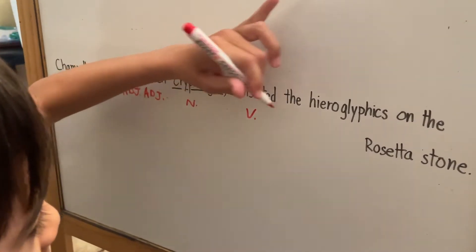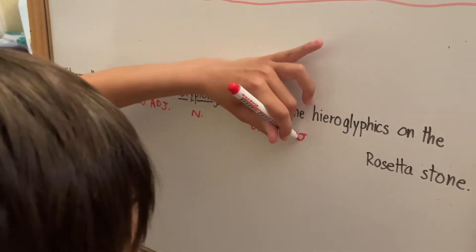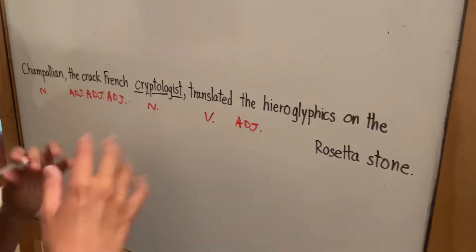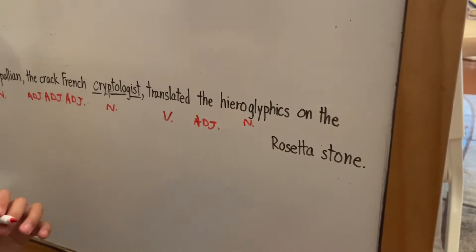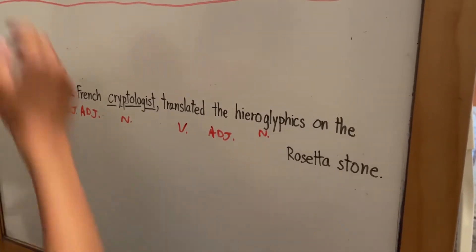'The'—another adjective. Hieroglyphics is a noun because it's a thing. 'On' is a preposition, kind of like 'in' or 'off' or 'up there.'